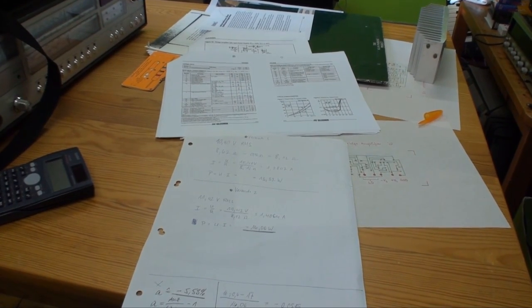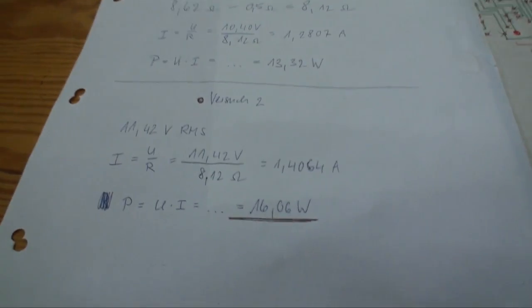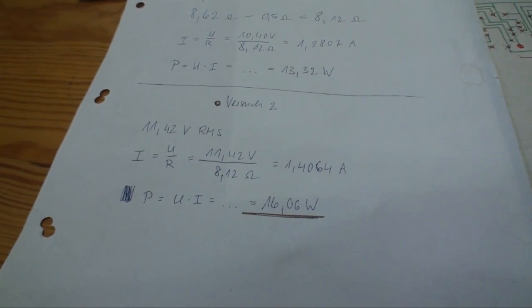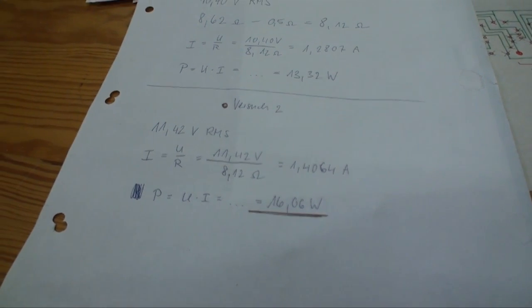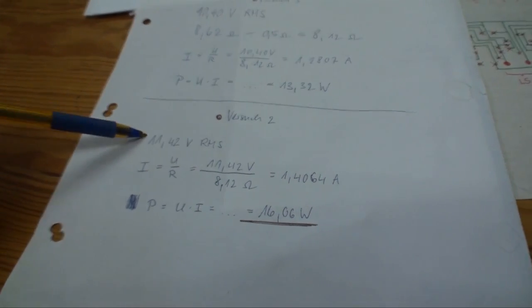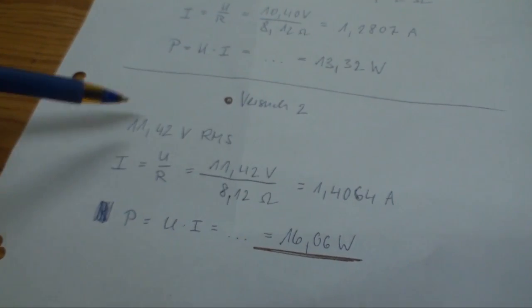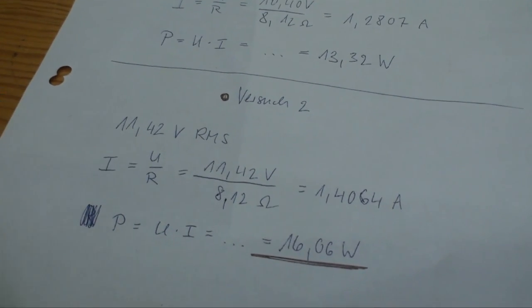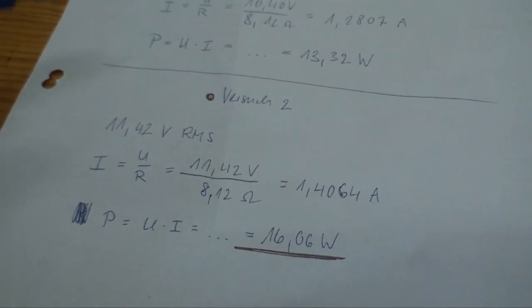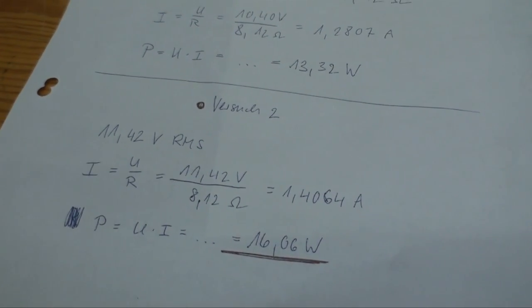And here comes the theory. Don't worry, it's all very, very easy. What we have right here, now these are all my results from last night's experiments, where I didn't have a camera with me. We have our output voltage. Now, we just got 11.3 volts. Yesterday, I got 11.42 volts RMS, of course. Good old Ohm's law, and that's what we need right now.